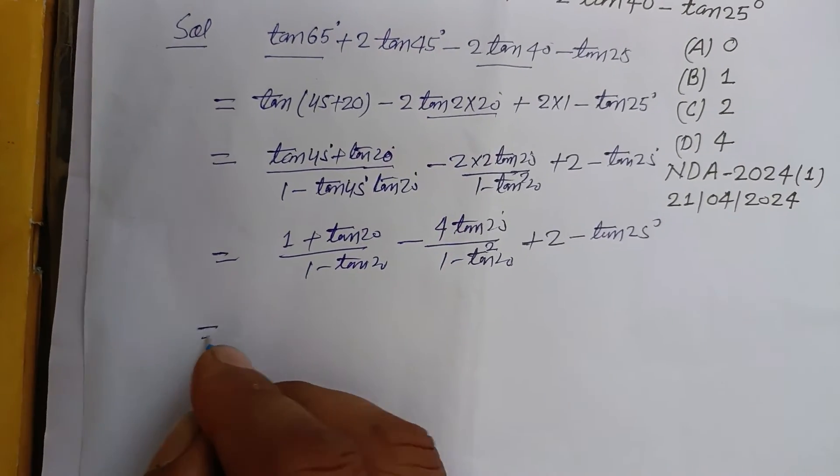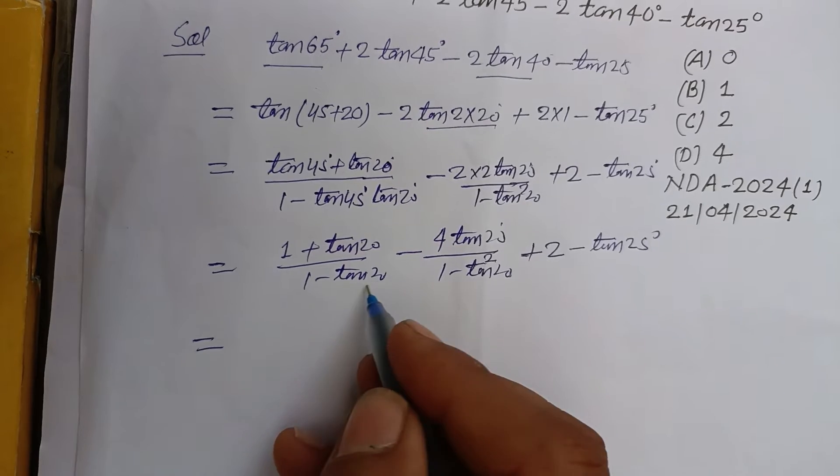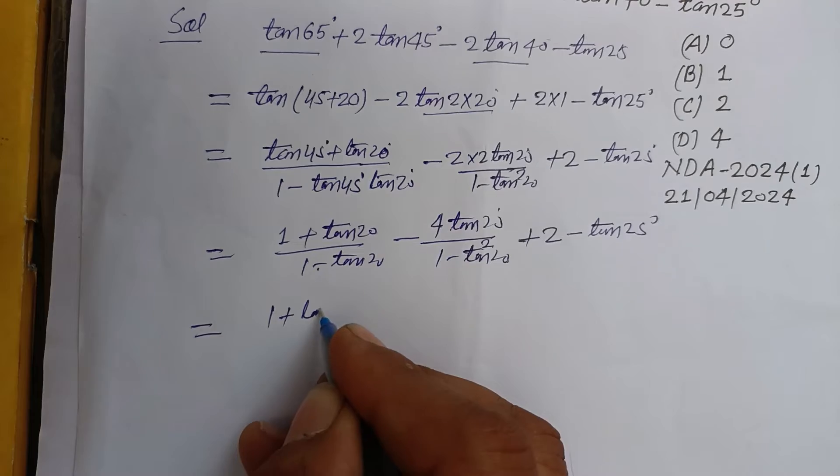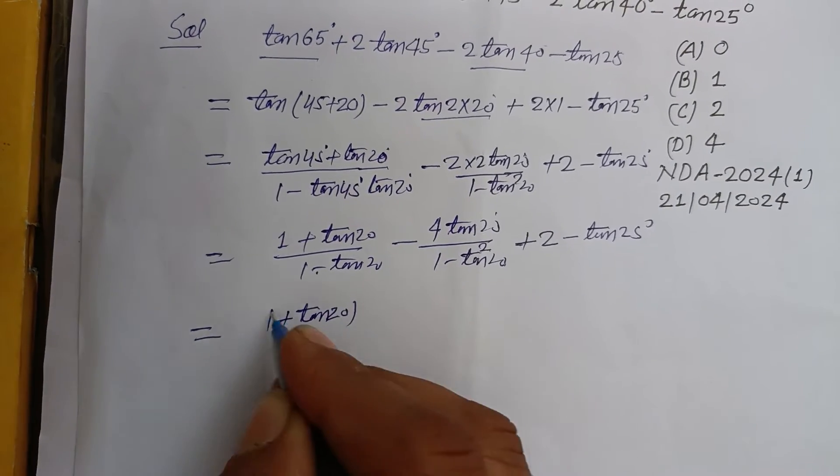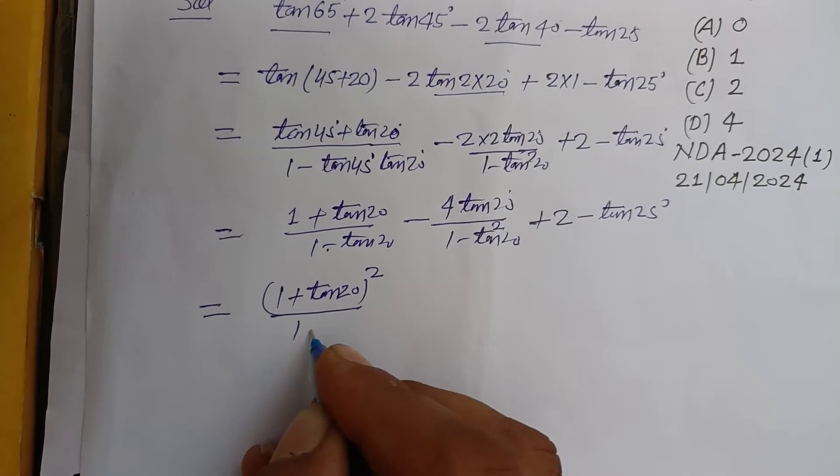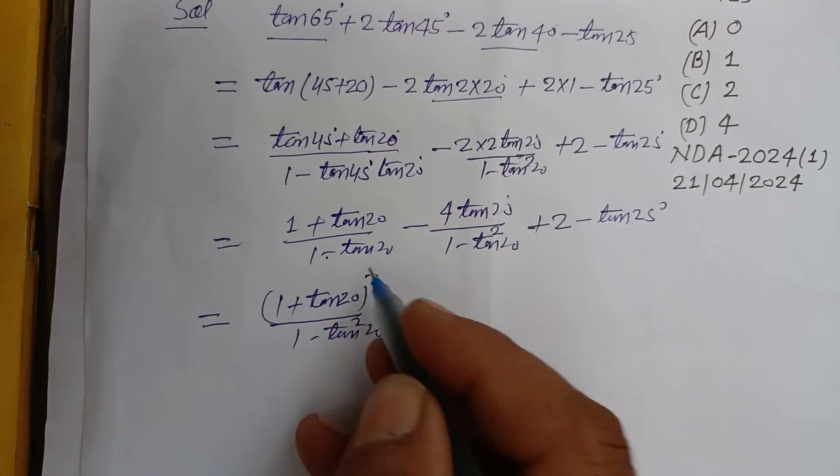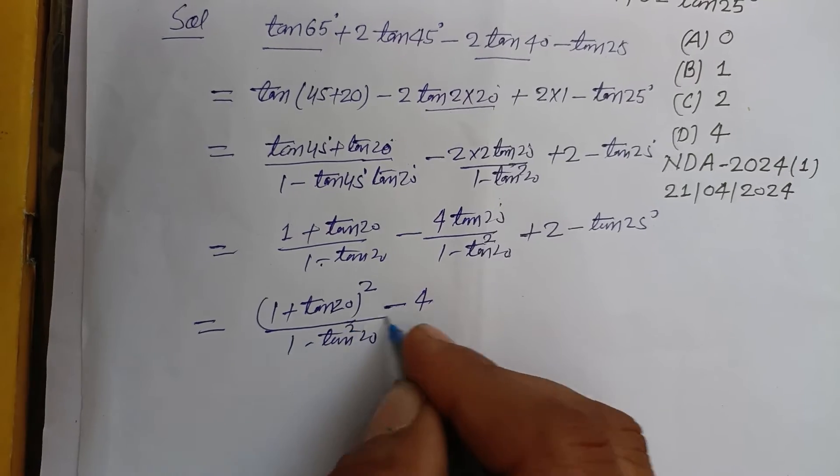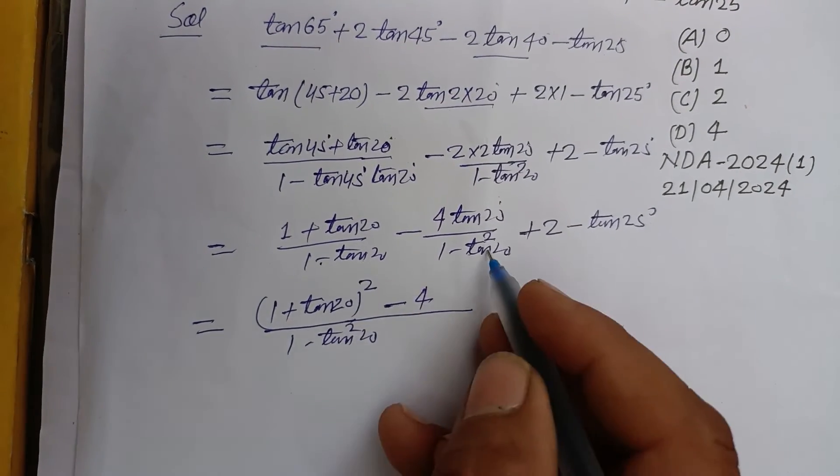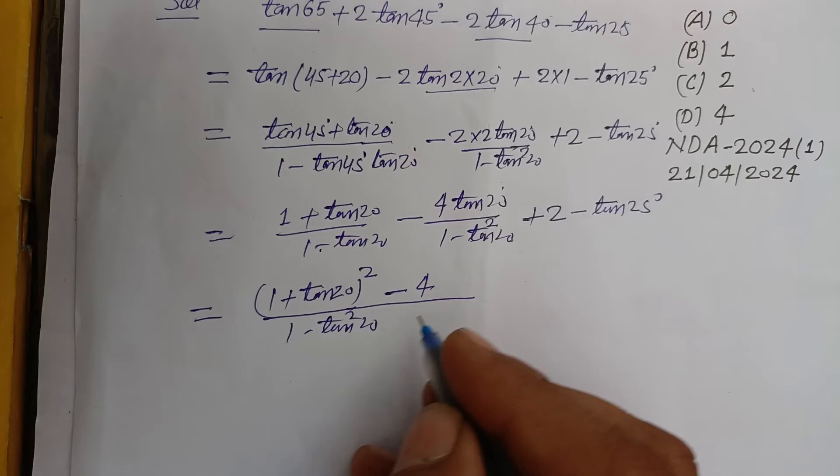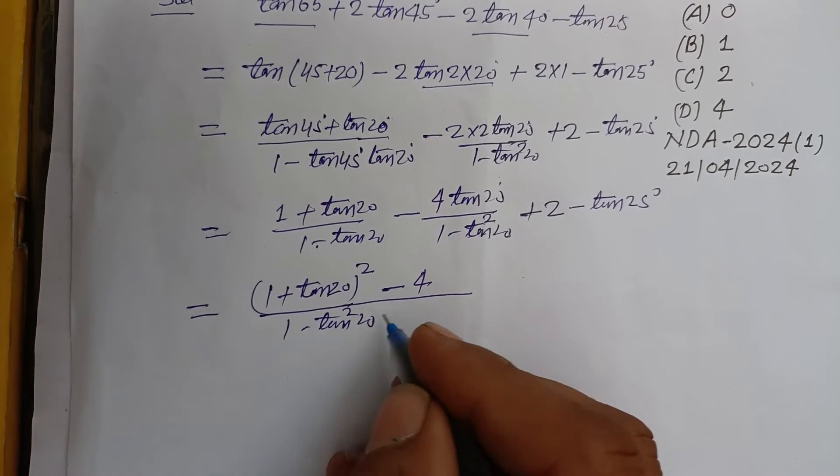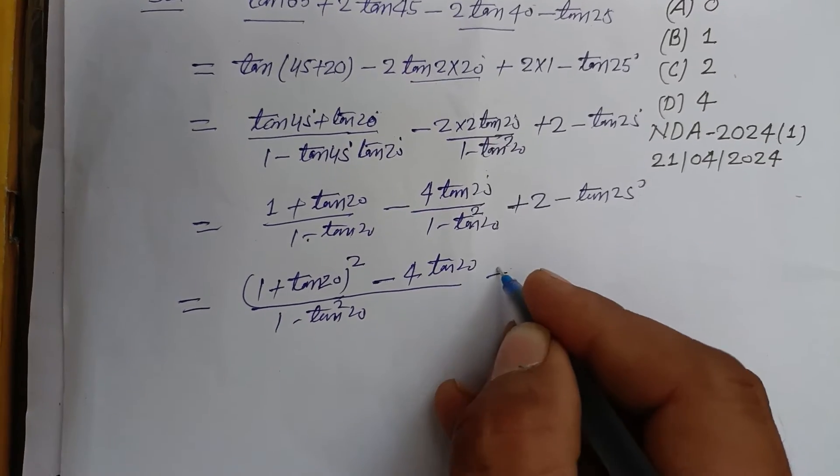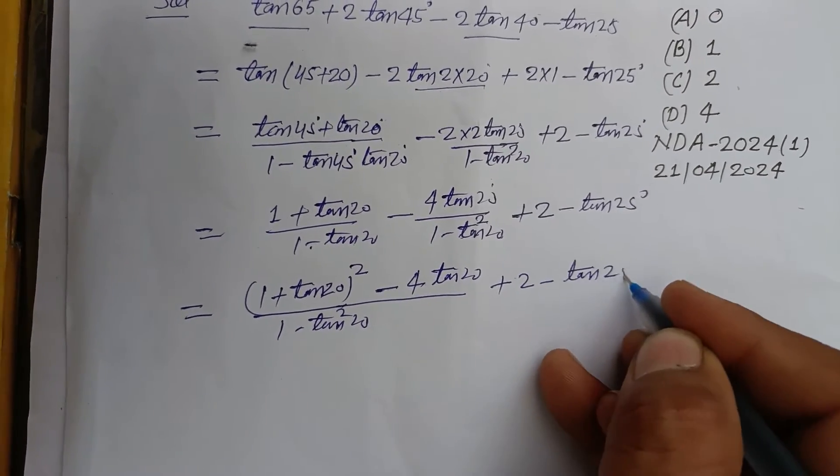Minus 4tan20° over 1 - tan²20°, plus 2 minus tan25°. Now we multiply the denominator by 1 + tan20°, so the numerator becomes (1 + tan20°)² and the denominator is 1 - tan²20°. Using a + b times a - b, this becomes 4tan20° with LCM 1 - tan²20°, plus 2 minus tan25°.